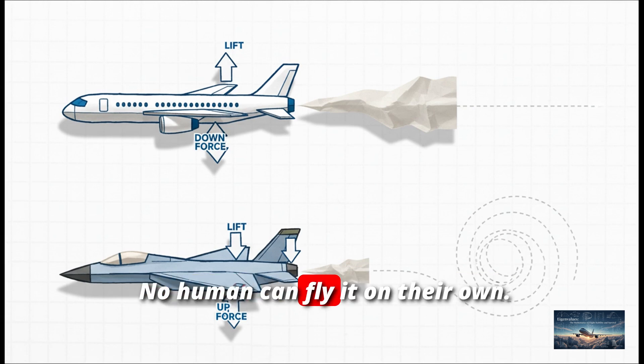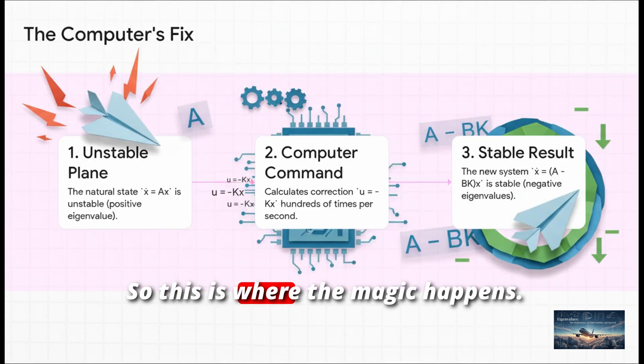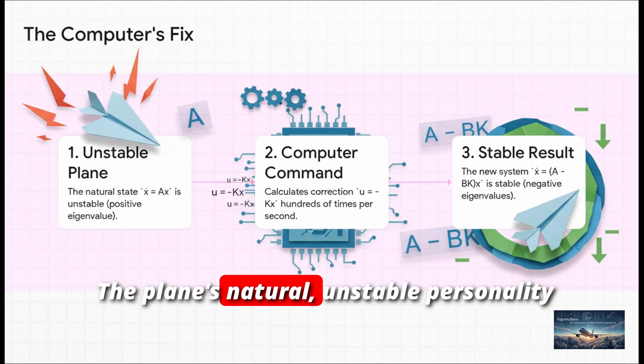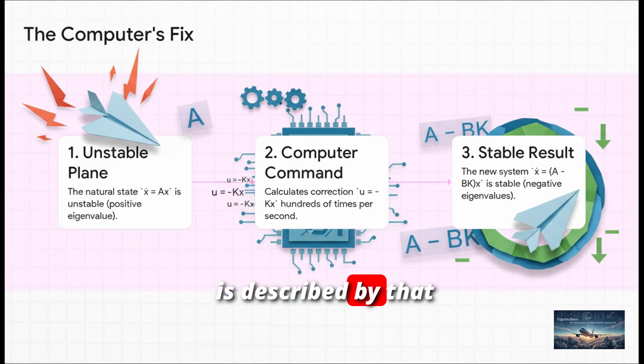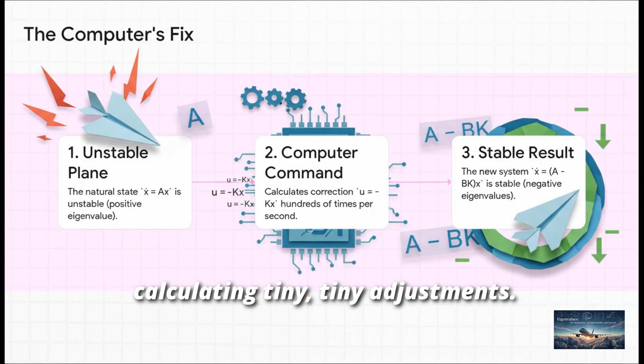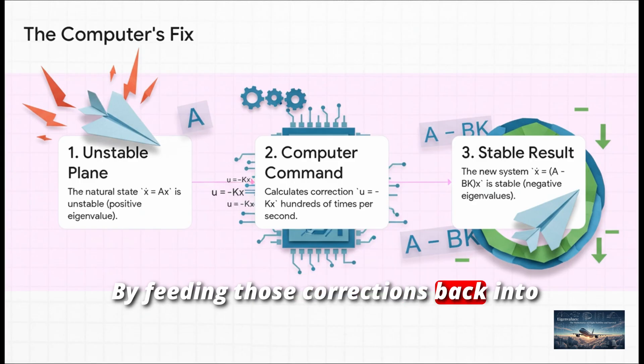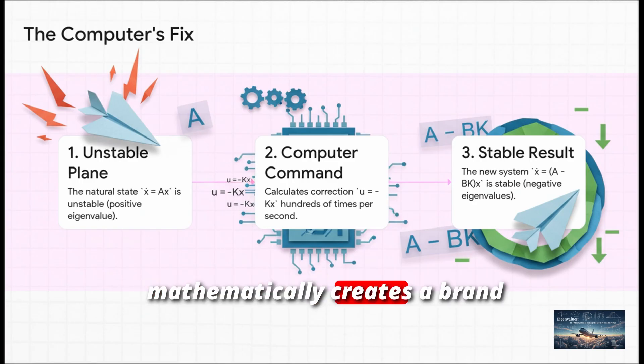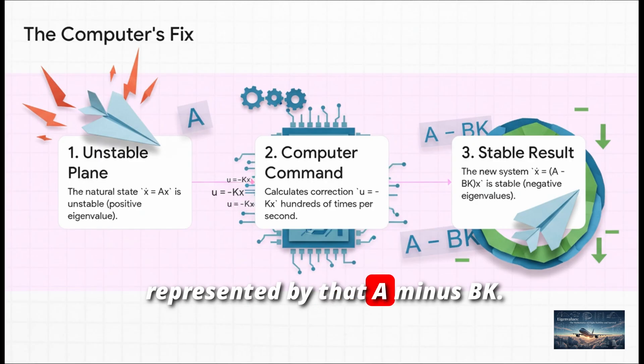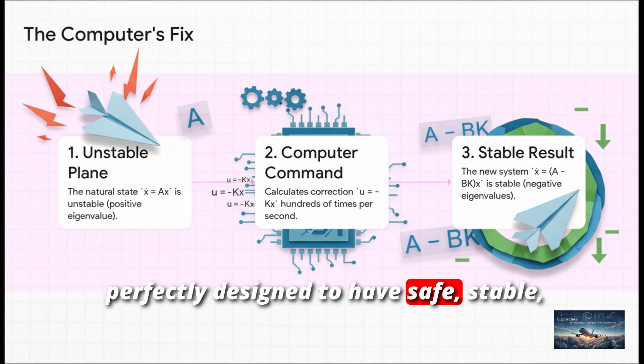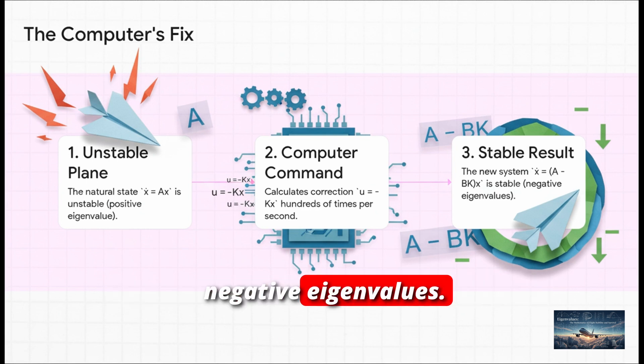The catch? No human can fly it on their own. So this is where the magic happens. The plane's natural, unstable personality is described by that matrix A. But a flight computer is constantly calculating tiny adjustments. That's the correction U. And it's doing this hundreds of times a second. By feeding those corrections back into the system, it mathematically creates a brand new airplane, a new system, represented by that A minus BK. And this new virtual plane has been perfectly designed to have safe, stable, negative eigenvalues.